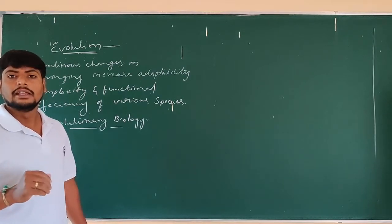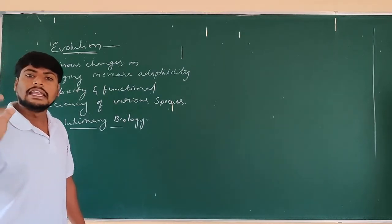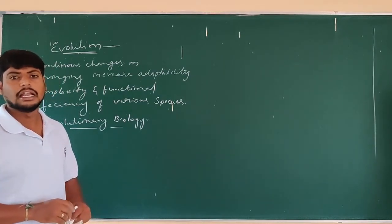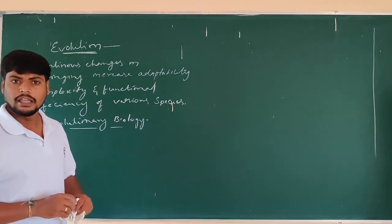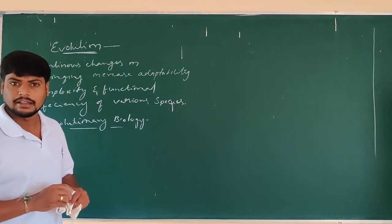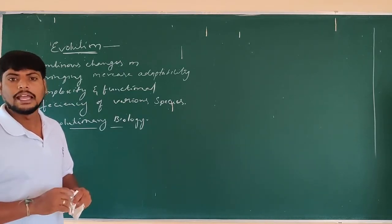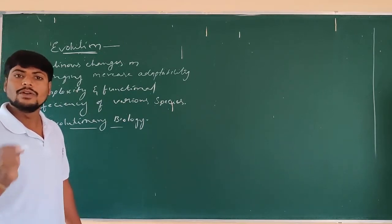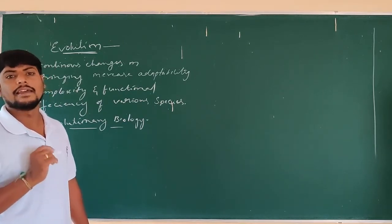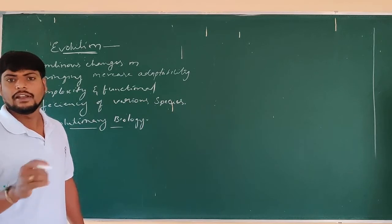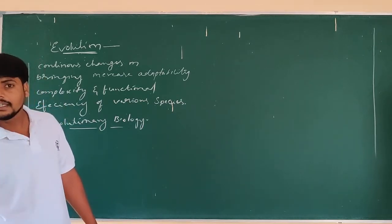The theories proposed for the origin of life include: special creation, spontaneous generation, cosmozoic theory, biogenesis, and chemical origin of life. Different scientists proposed different theories to explain how life originated.